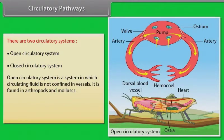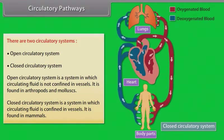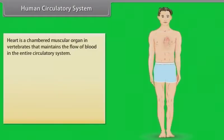In an open circulatory system, the circulating fluid is not confined in vessels; it is found in arthropods and mollusks. In a closed circulatory system, the fluid is confined in vessels; it is found in mammals. The human heart is a chambered muscular organ in vertebrates that maintains the flow of blood in the entire circulatory system.